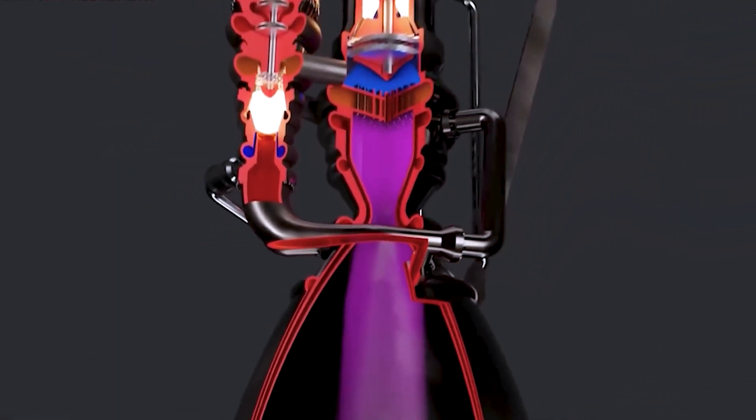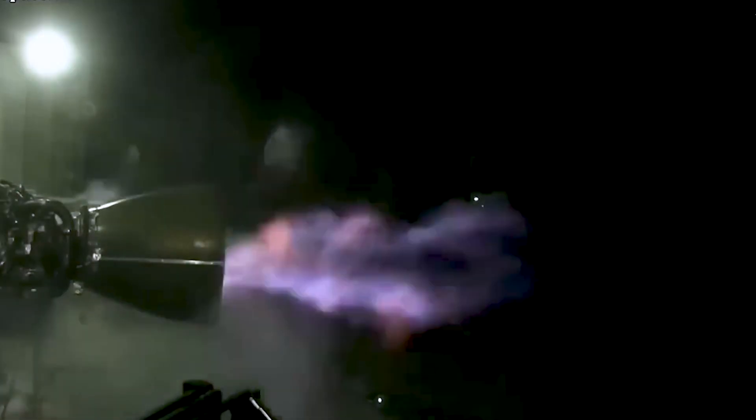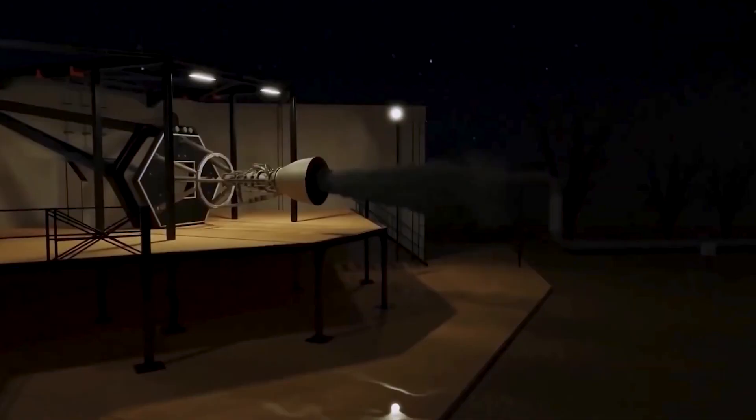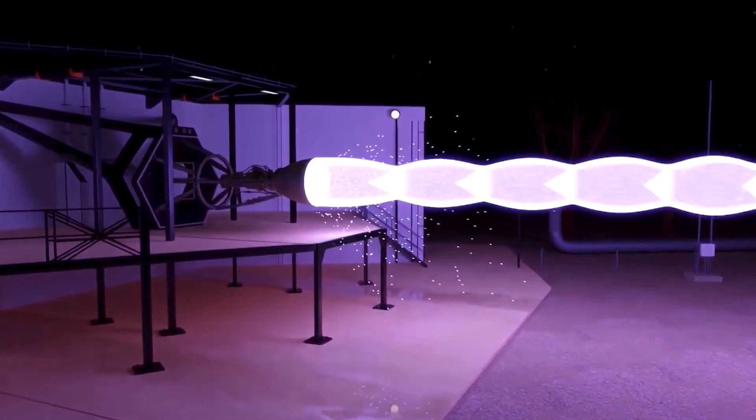This cycle involves using a preburner to initiate the spinning of a turbine that drives the engine. Typically, in traditional open-cycle engines, some propellant is expended to start this process. But the Raptor makes use of every drop of available propellant, making it one of the most efficient rocket engines ever built.